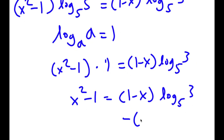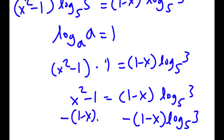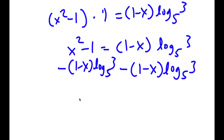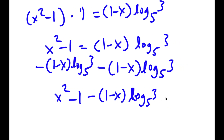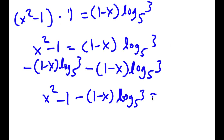Now if I subtract 1 minus x times log base 5 of 3 from both sides, I get x squared minus 1 minus 1 minus x times log base 5 of 3 is equal to 0.